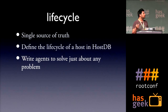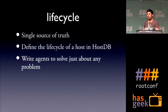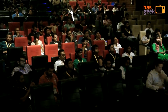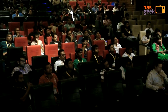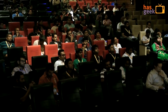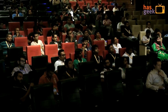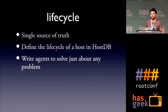So essentially you have a single source of truth, you define the life cycle of the host. If you have to delete a host, you go to the host database and say this host is dead. Then the orchestration layer — the cloud layer — looks at HostDB, sees that one is dead, goes and kills that machine off, and takes back all the resources.